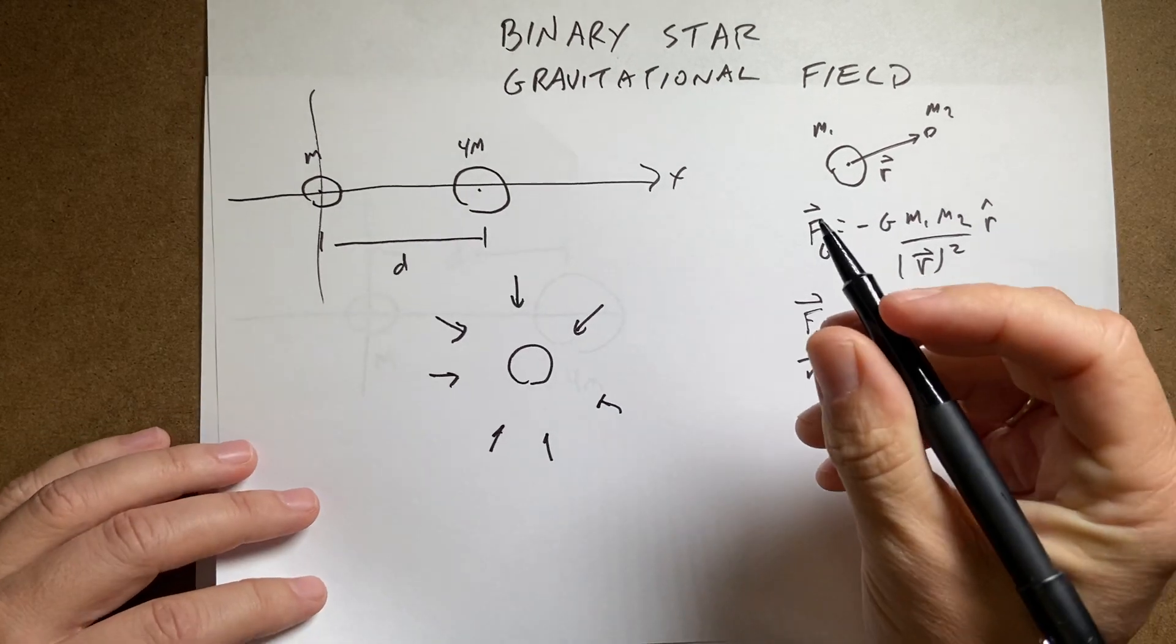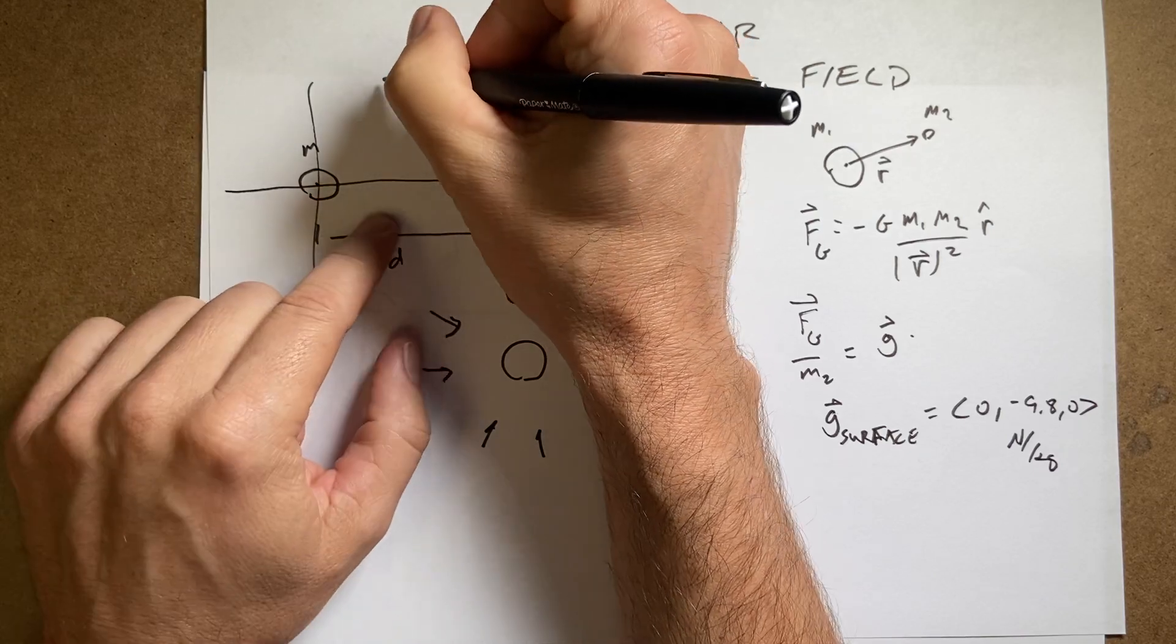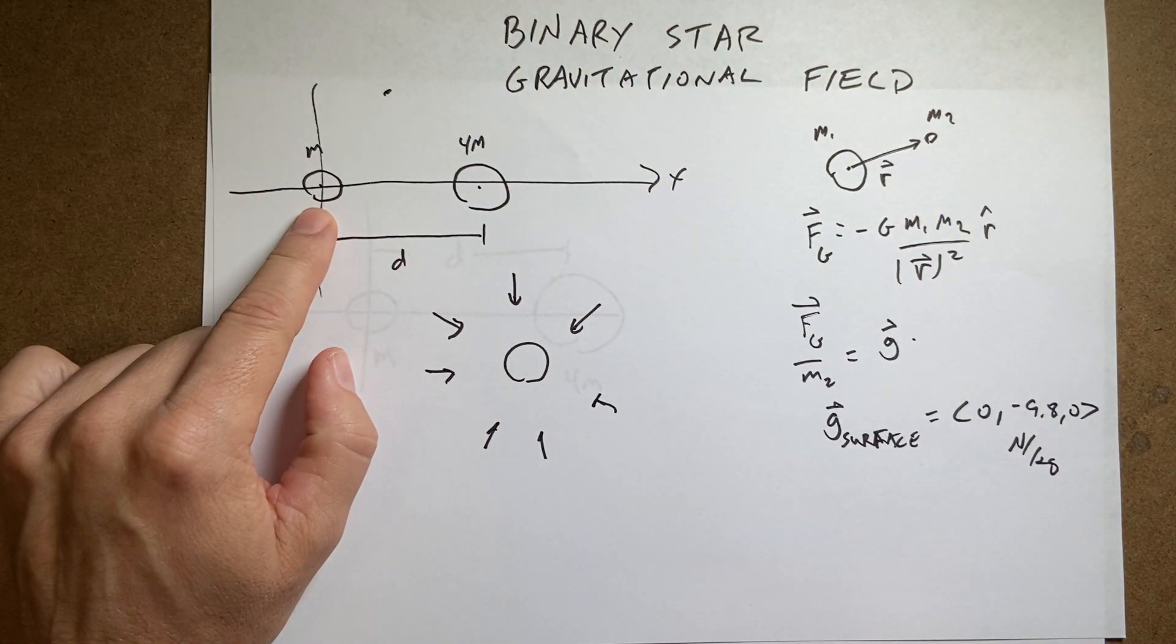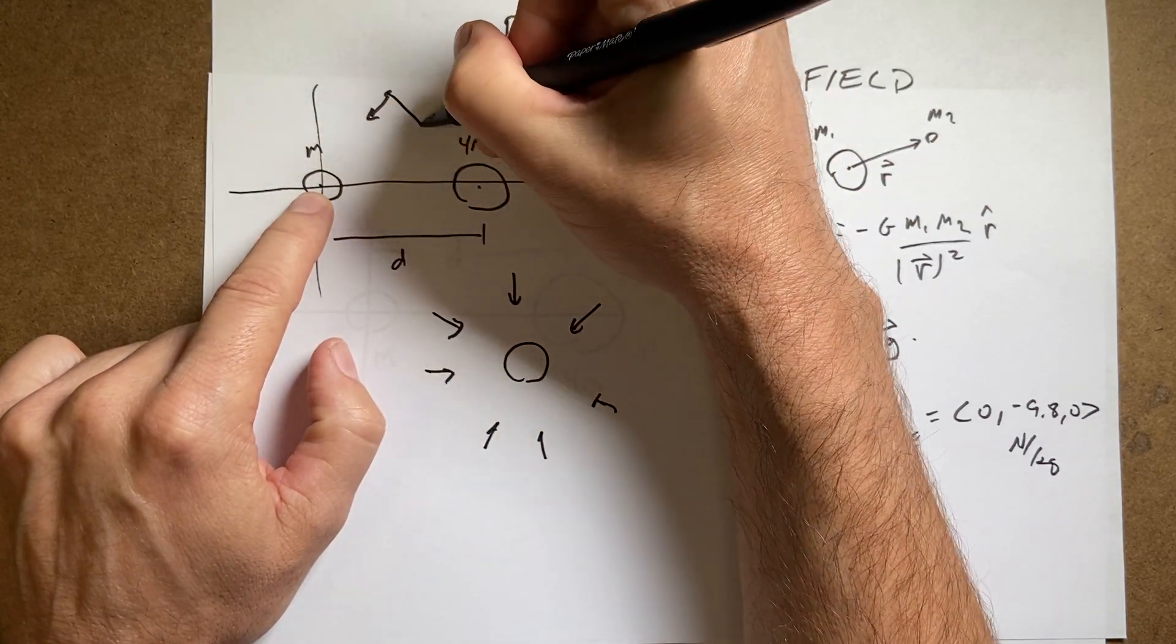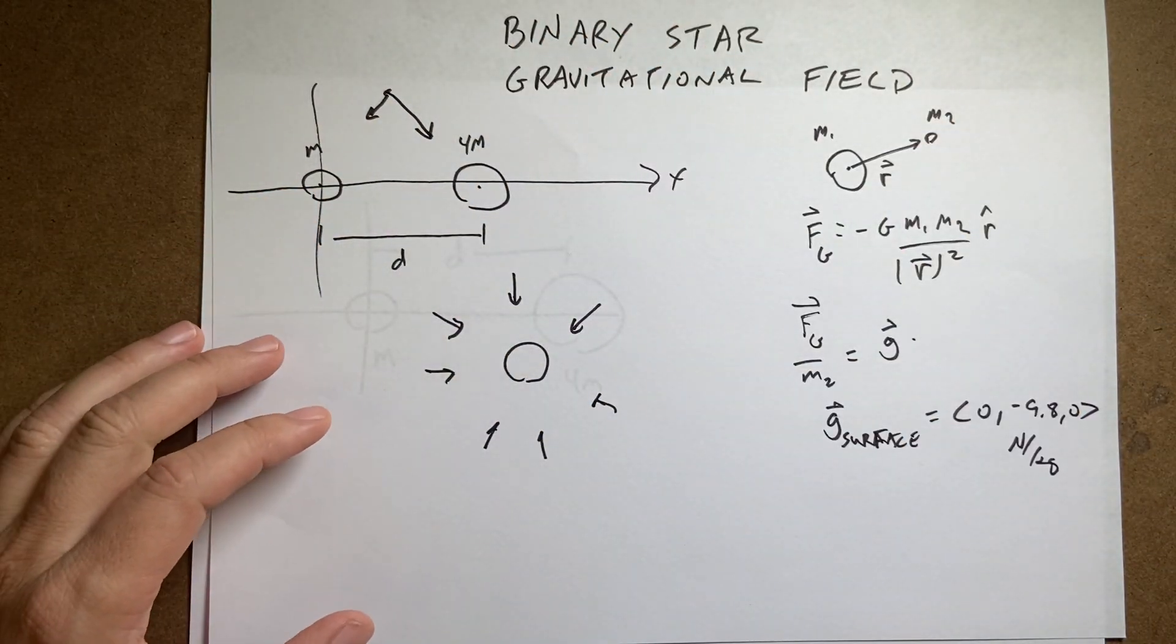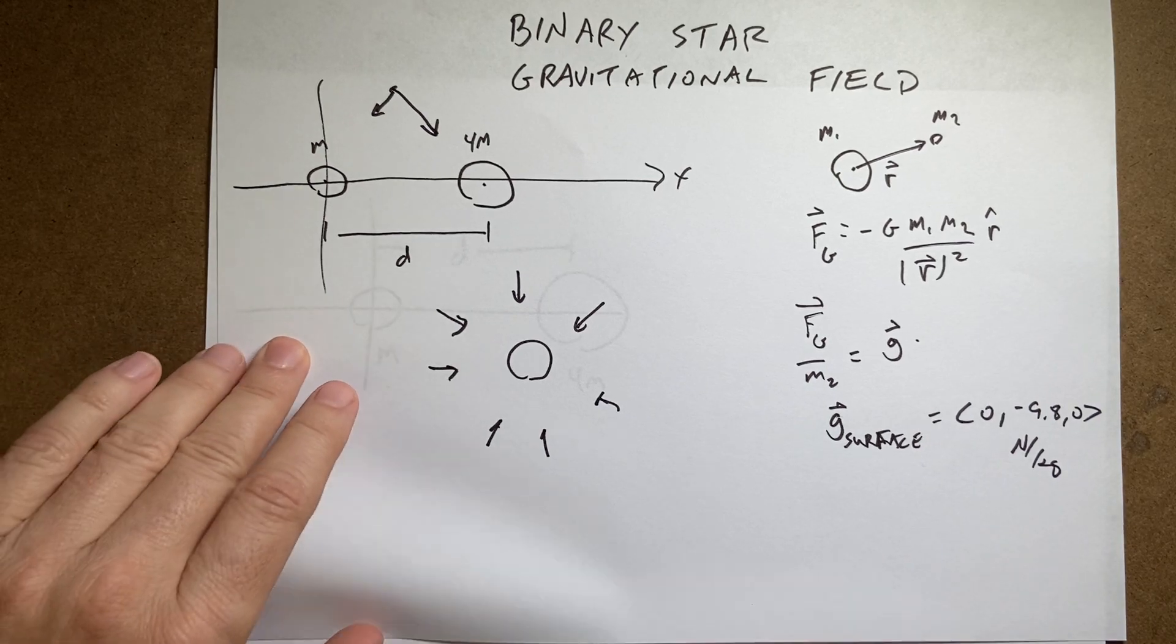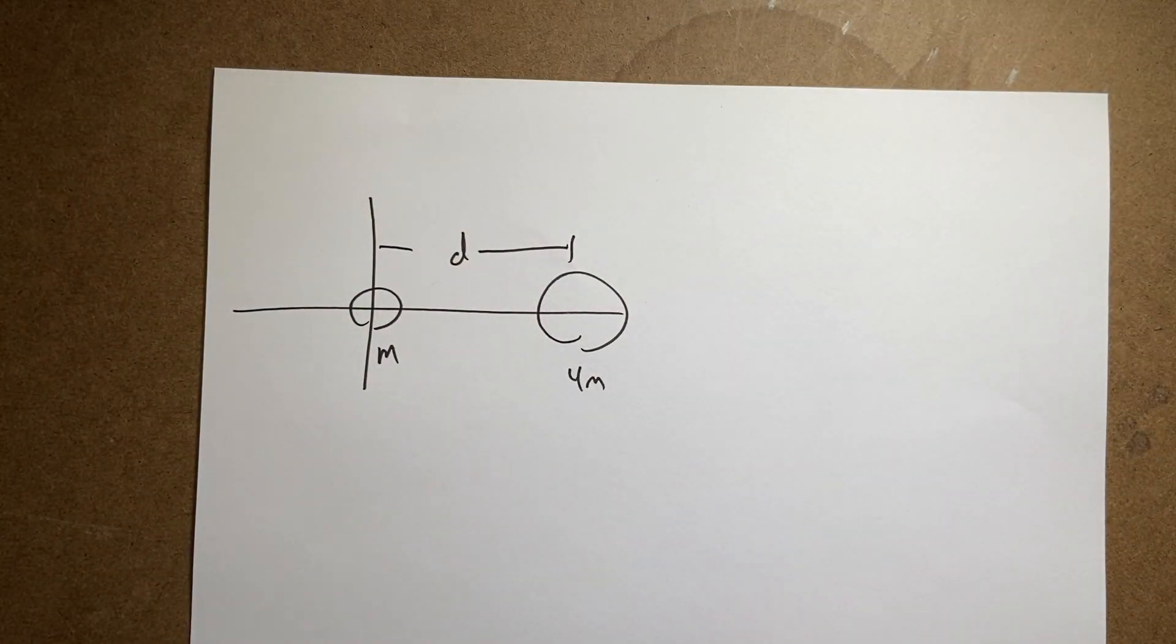So it obeys what's called superposition. So if I take a point up here and I want to calculate the gravitational field, it's the gravitational field right there due to mass m plus that one over there as a vector. Okay, so I add up the gravitational fields. I can find them individually.